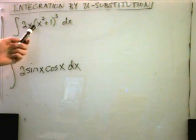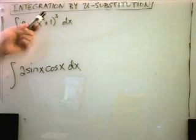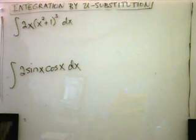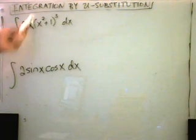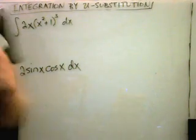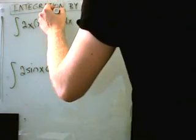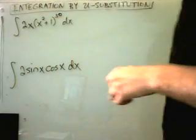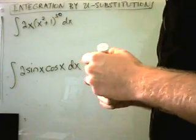So notice this first problem. We have 2x times the quantity x squared plus 1 cubed. And if you had to, you could cube out the x squared plus 1 term and distribute it by the 2x. But what if we make this one harder? What if we raise it to the 30th power? Definitely, you're probably not going to want to multiply that one out now.